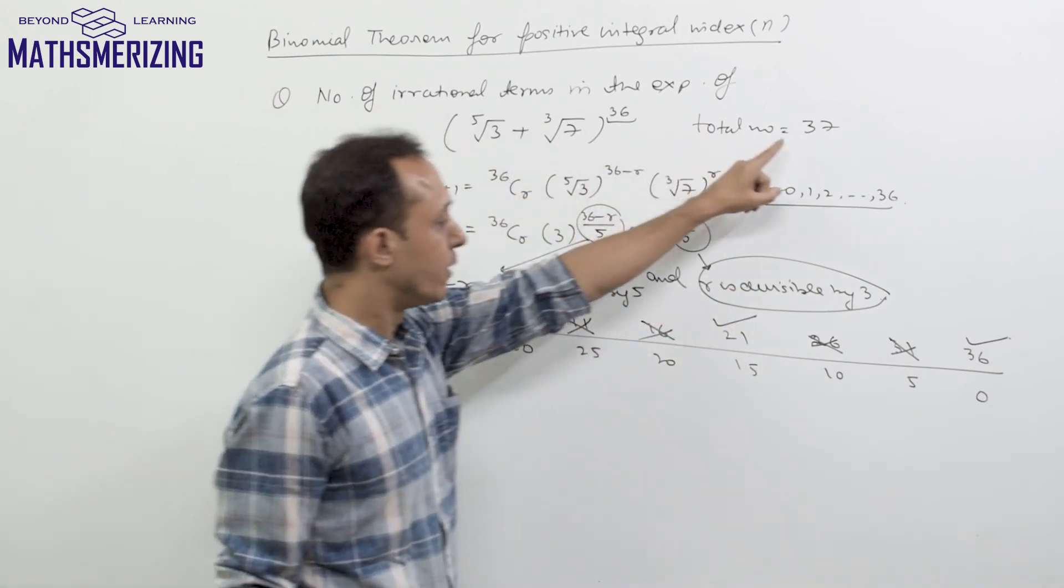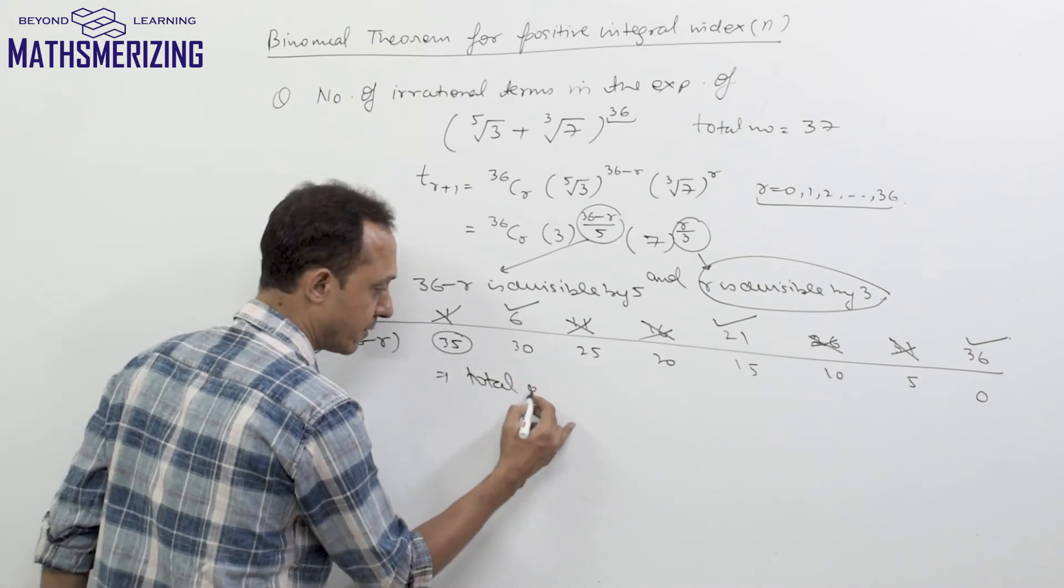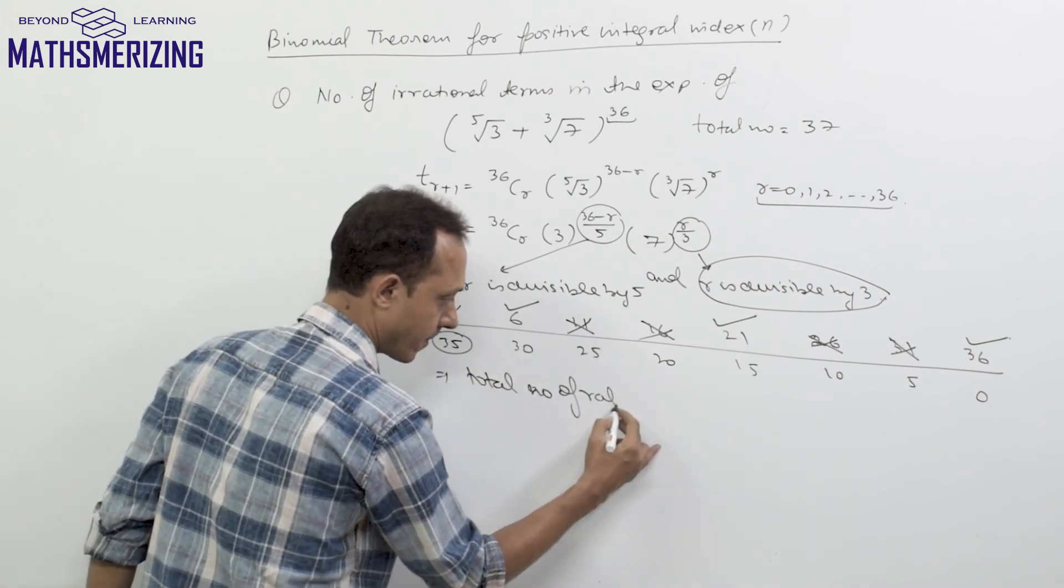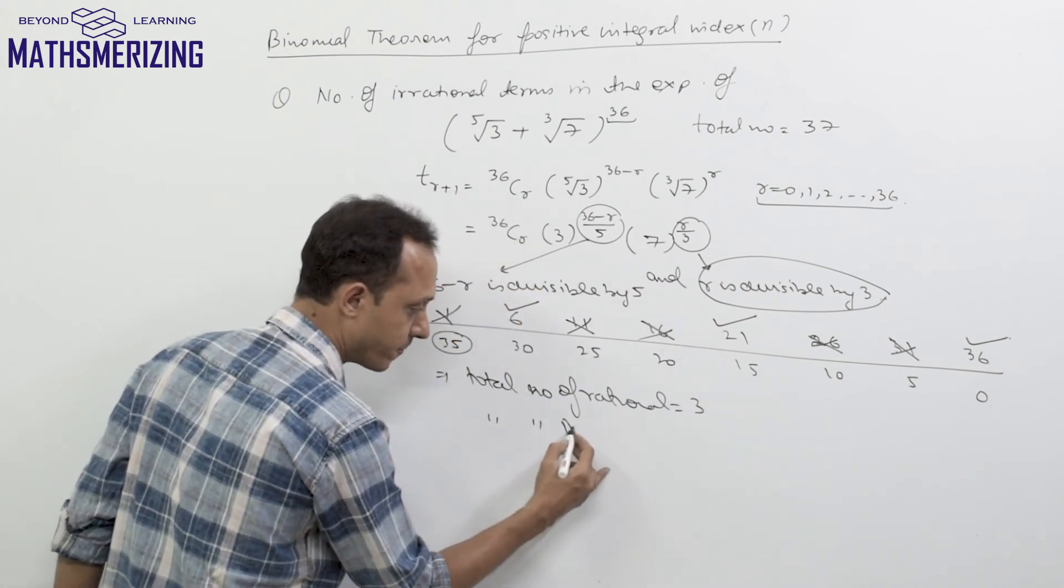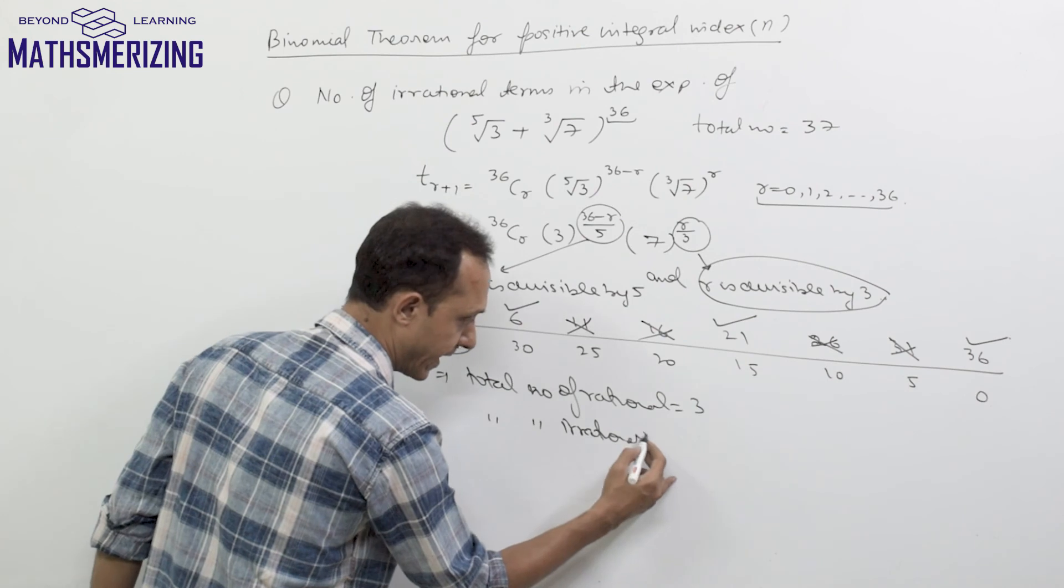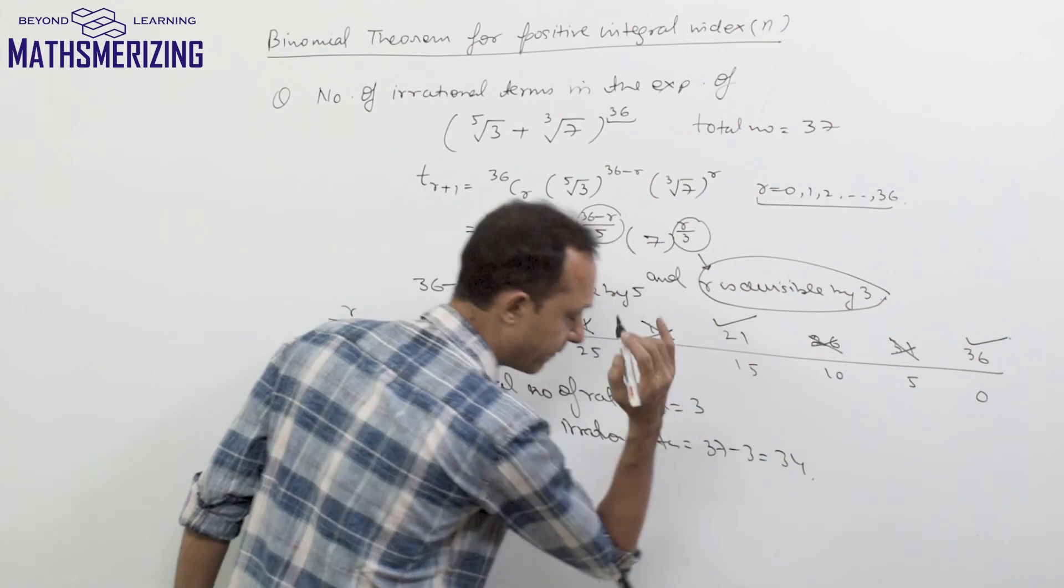total number of rational terms will be simply 3 and total number of irrational terms will be 37 minus 3 which will be 34.